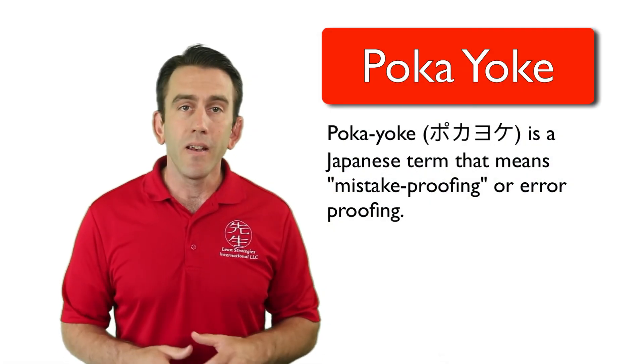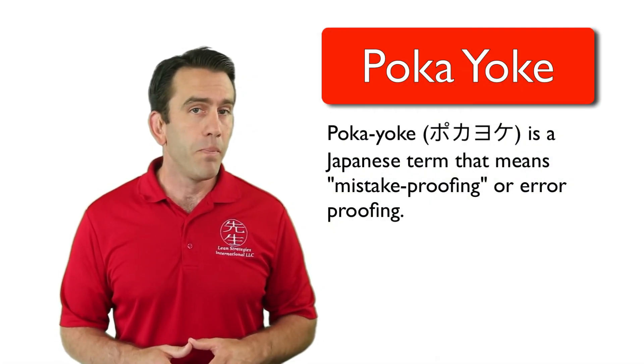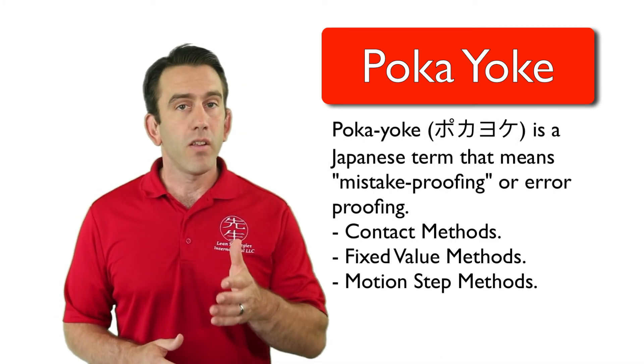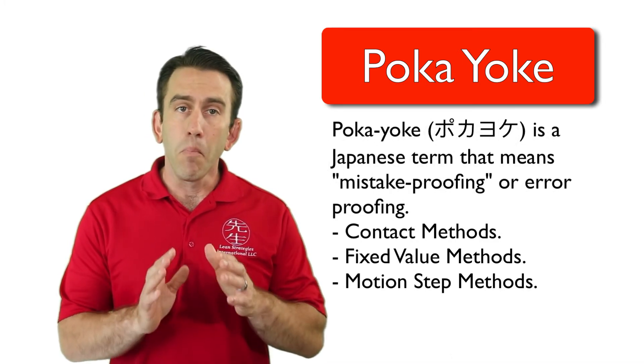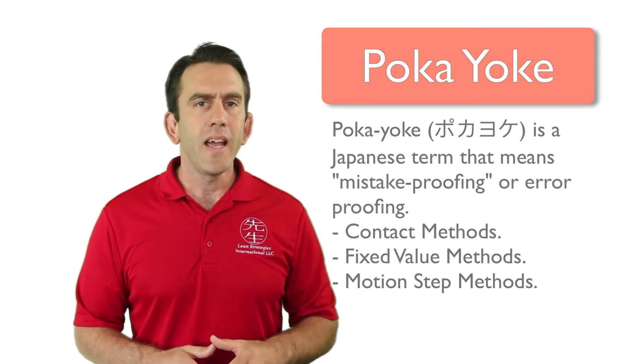Keep in mind that the heart of poka-yoke is error proofing. We've outlined the contact method, fixed value method, and the motion step method. But, like any continuous improvement tool, you may discover other methods as well. As long as you improve and prevent errors and defects, those methods should be used too.